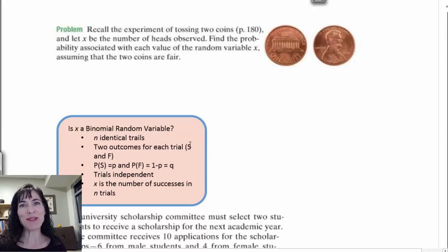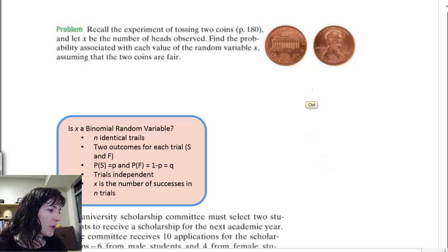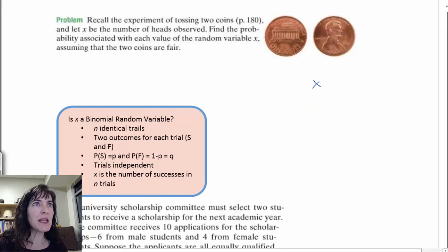And you remember the coin toss, of course. Let x be the number of heads observed. And so we looked at that in our 4.3 as well. We're still thinking about that. And we want to find the probability associated with each value of the random variable x, assuming that the two coins are fair. And we did this before. Remember, we had our x's and we had the probabilities of the x's.